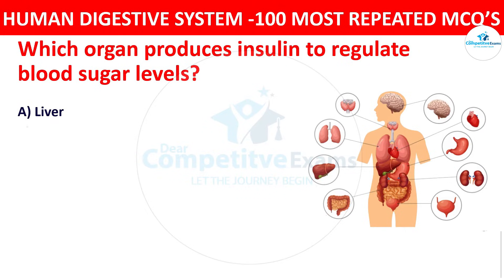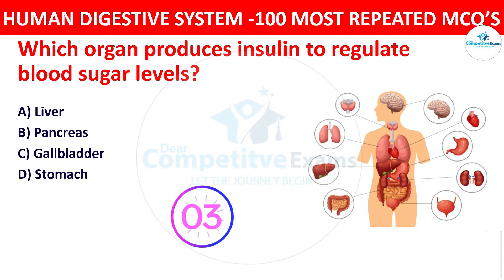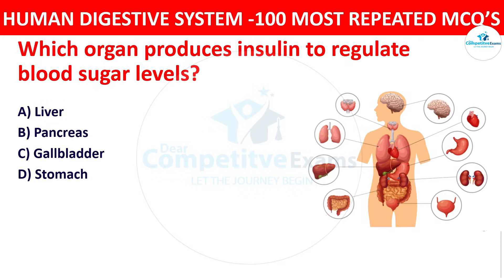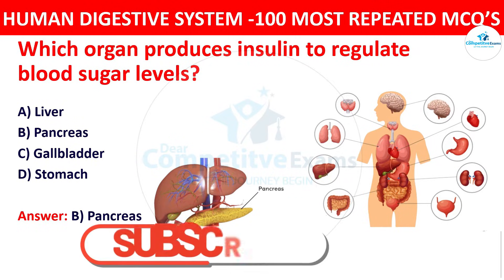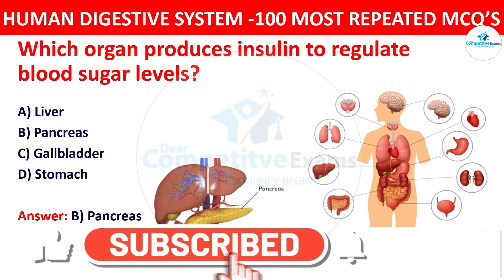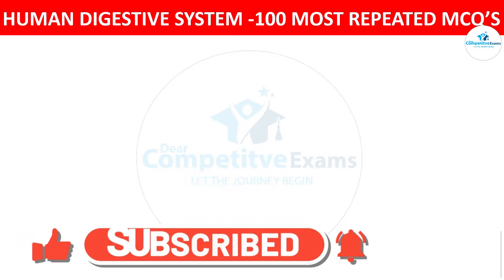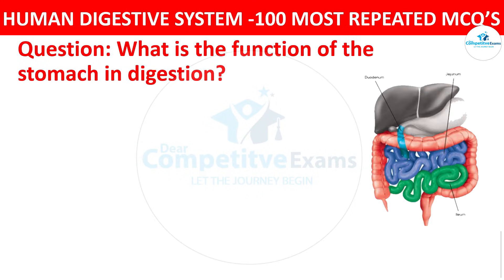The right answer is pancreas. The pancreas produces insulin to regulate blood glucose levels and facilitate the uptake of glucose by cells. Question number six: What is the function of the stomach in digestion?